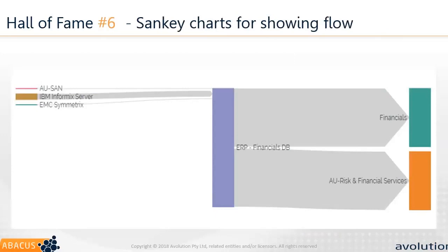Sankey diagrams are starting to pop up more and are really good for showing flow of information — the magnitude flowing into a certain area and how much flows out. In this case we're looking at an application: most of its cost is inherent in itself, but some comes from other areas on the left, and the cost gets attributed to different business areas that consume it. When you're building cost models, that's a really good way of showing how those flows come in and out.